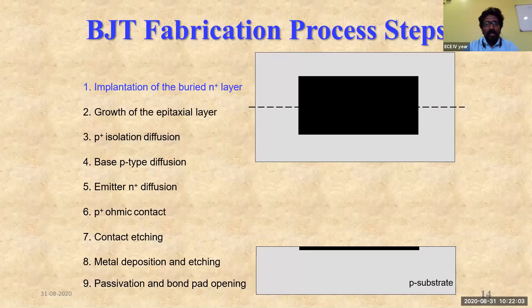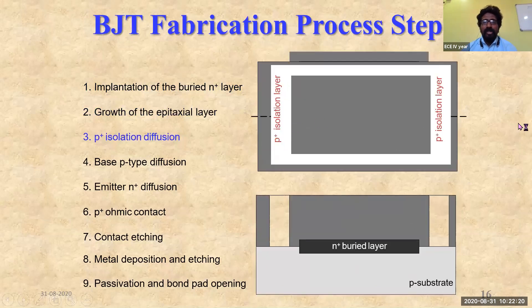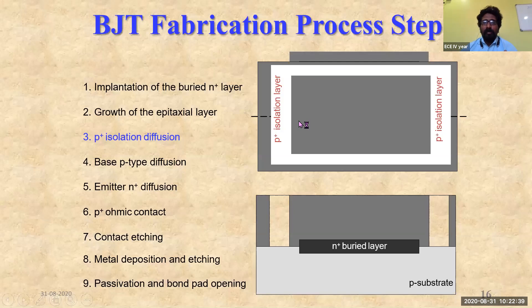After that, the growth of the epitaxial layer is created upon the entire P substrate, and an N-type epitaxial layer is formed. After growing this epitaxial layer, the P+ isolation layer is created on both sides of the complete design. The P+ isolation layer isolates and protects the entire design from any further impurity deposition or harm to the structure.